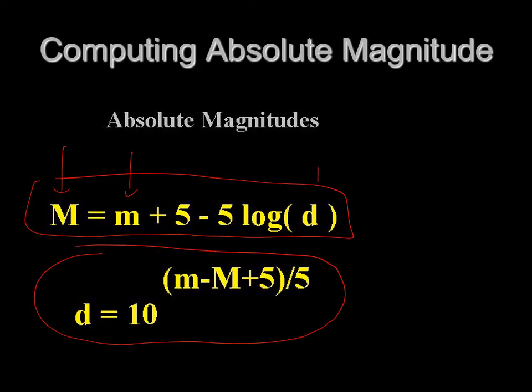It's d = 10^((m-M+5)/5). All of this is the exponent - m minus M plus 5 over 5. This is not multiplication, this is an exponent. Let's do an example.